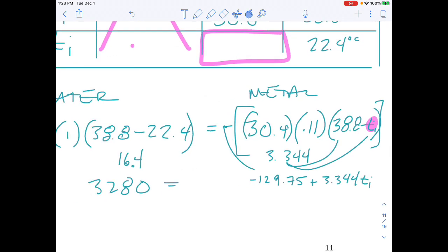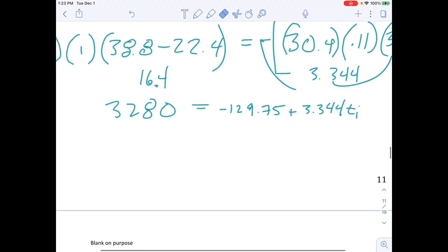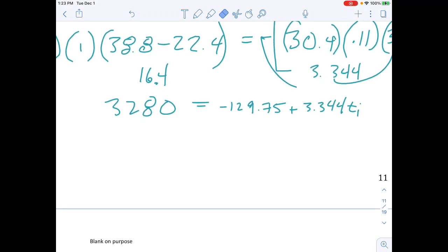I'll kind of bring my equation together a little bit here with the magic of an iPad and notability. Now I have to get ti by itself. So I'll do 3,280 plus 129.75. 3,409.75 equals 3.344 ti. I divide them out.